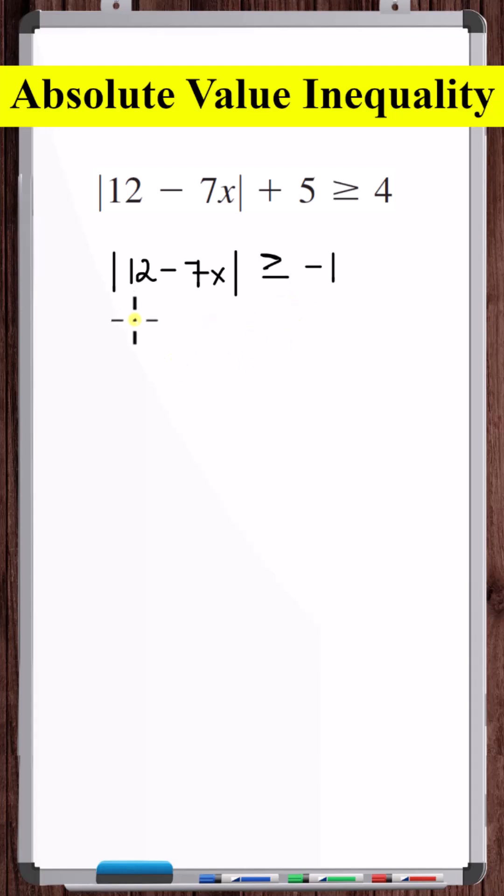For any value of x that we plug in, this inequality is always going to be satisfied. No matter what x we plug in, we're always going to get something that's greater than or equal to zero, which is always greater than or equal to negative 1. Therefore, the solution to this inequality is that x is all real numbers.